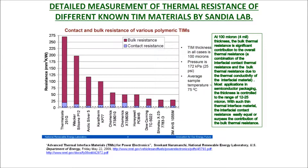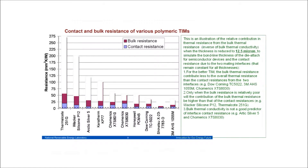As discussed earlier, thickness plays a key role in overall effectiveness in thermal management. For any fixed mated surfaces with controlled thicknesses, if the thickness is above 50 microns, there will be a drastic change in thermal performance. Most applications in semiconductor packaging utilize a controlled thickness in the 12 to 25 microns range.